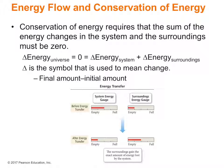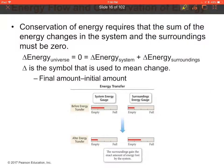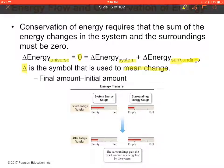Energy flow and conservation of energy require that the sum of energy changes in the system and the surroundings must equal zero. The energy of the universe equals zero, which equals the energy of the system plus the energy of the surroundings. The delta symbol means 'change,' so the change in energy of the universe equals the change in energy of the system plus the change in energy of the surroundings — final amount minus initial amount.